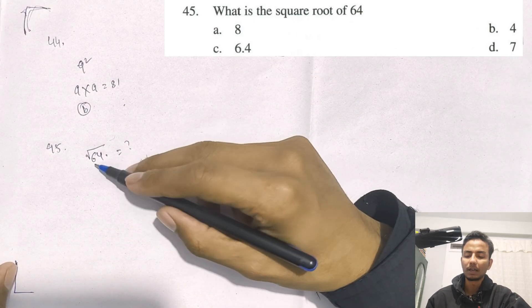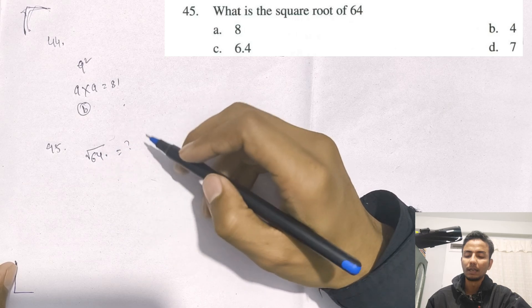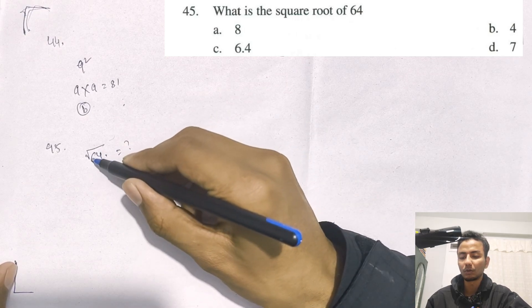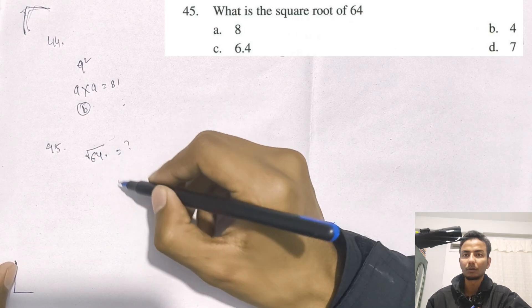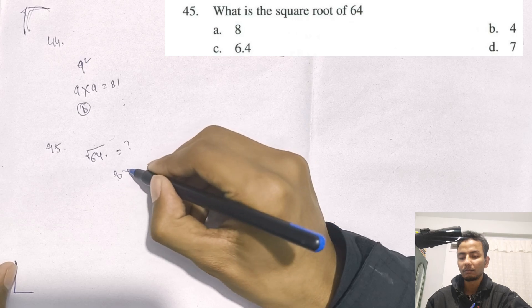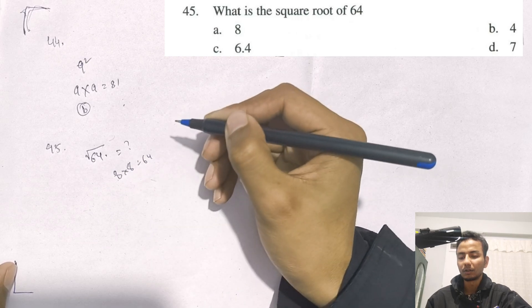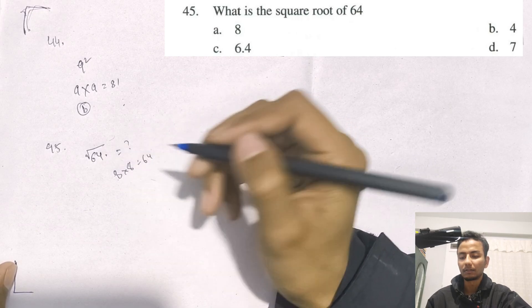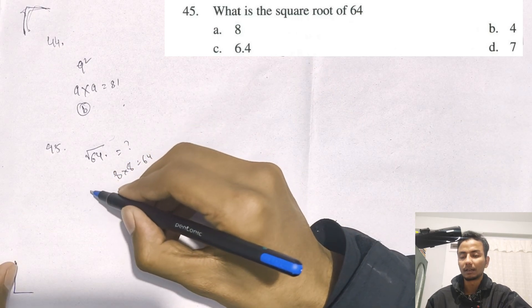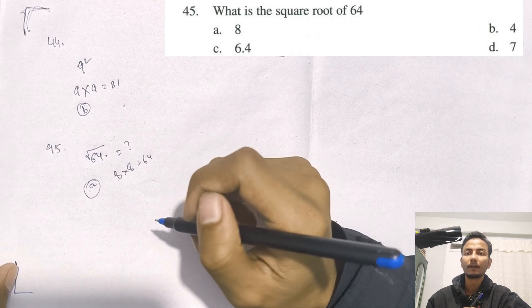This is 64. 8 times 8 is 64, so the square root of 64 is 8. The correct answer is A for question 45.